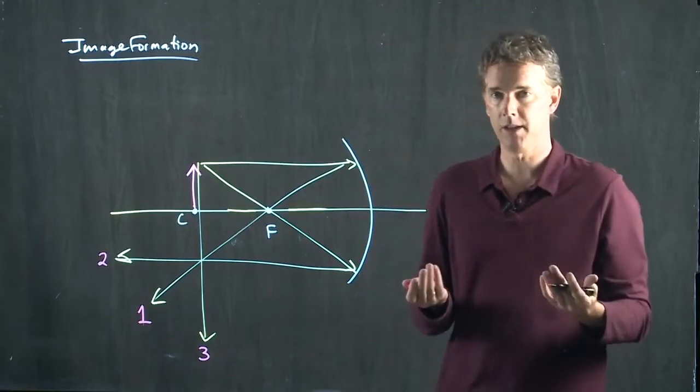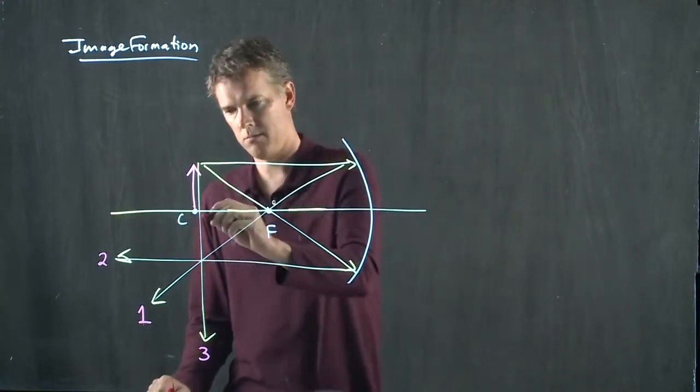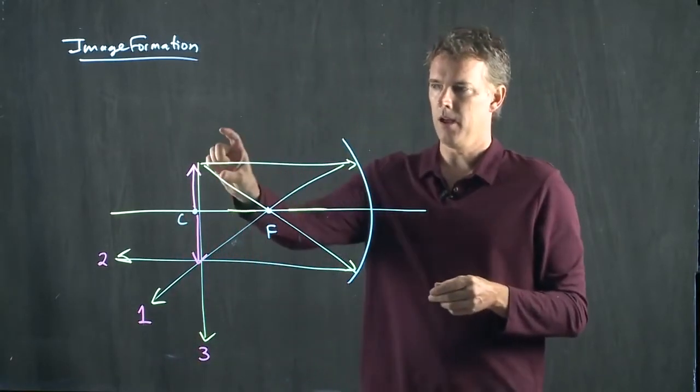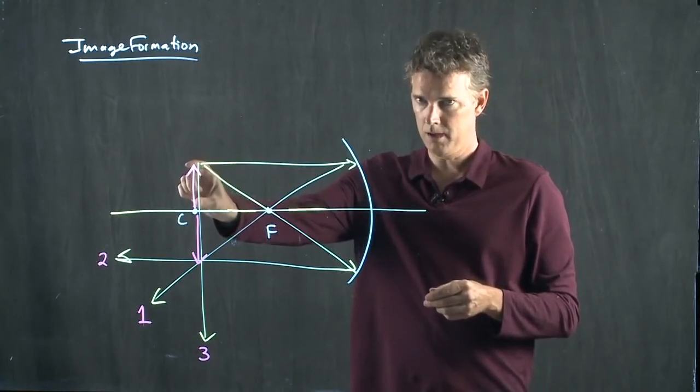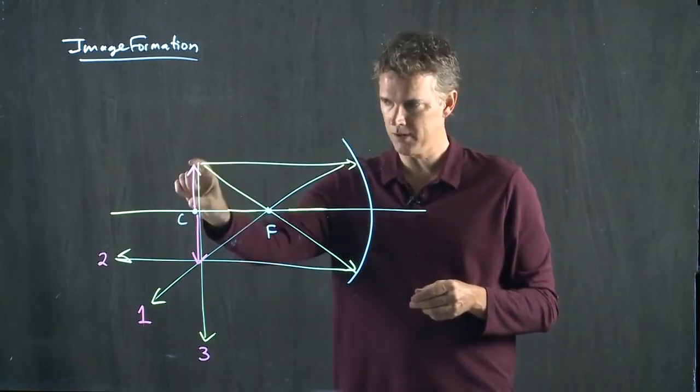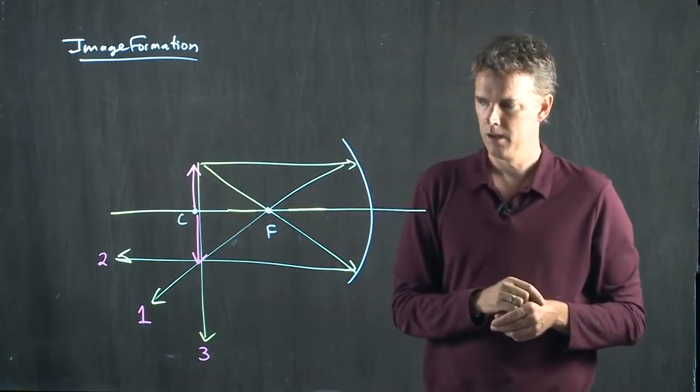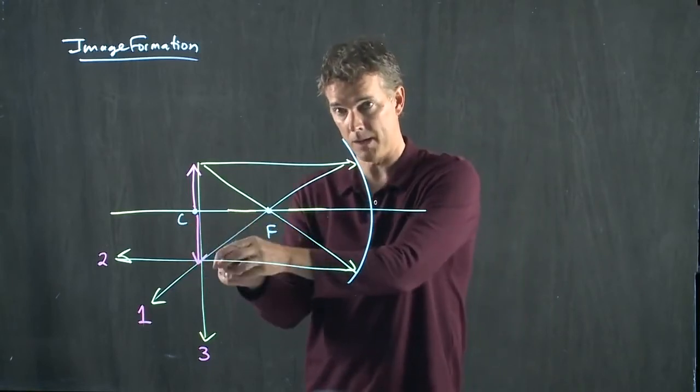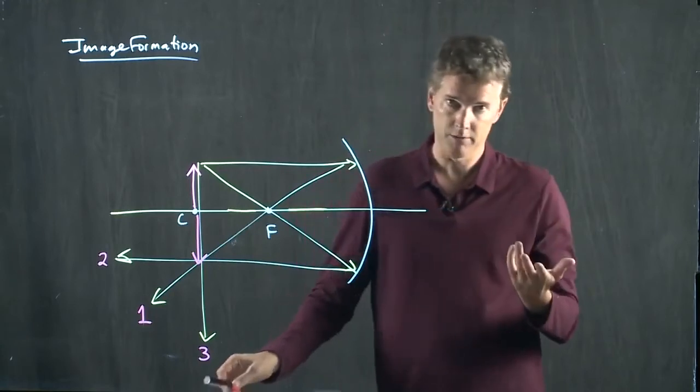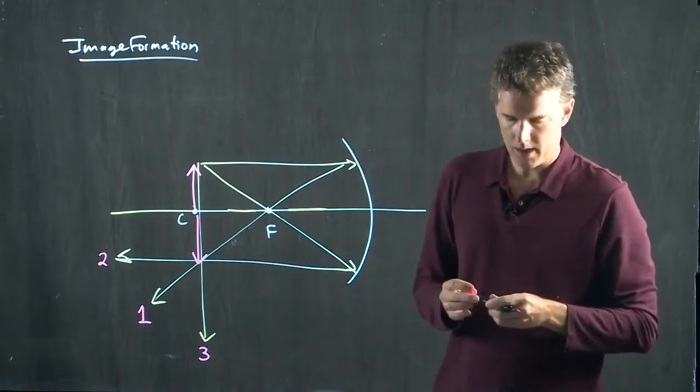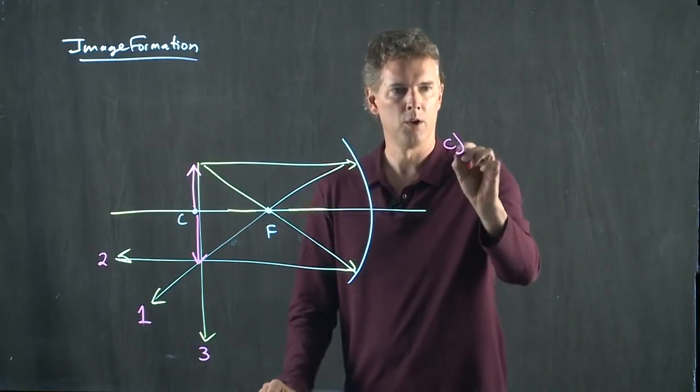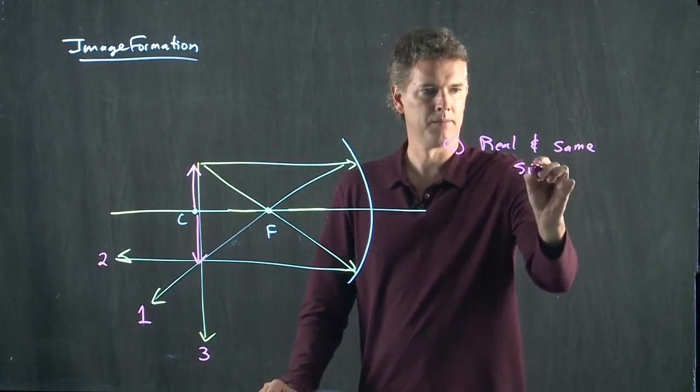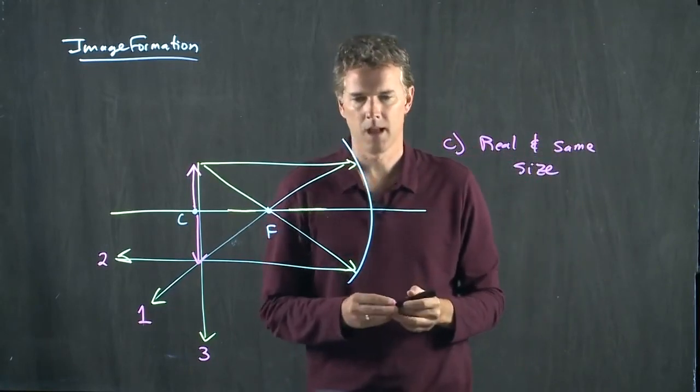And now where is the image? It's where they meet. That's where they meet. The image looks to be exactly the same size as the object. Here's our object. Here's our image. So it's also real because there are real rays coming to form it. And it is inverted, which just means upside down. And so the answer is C, of course, real, and same size. Excellent.